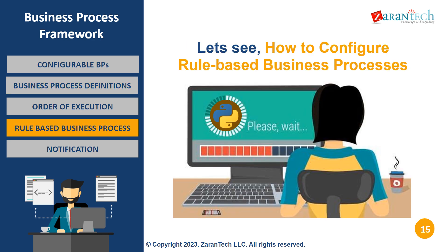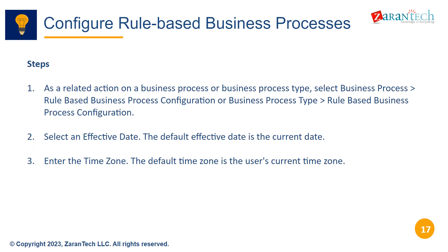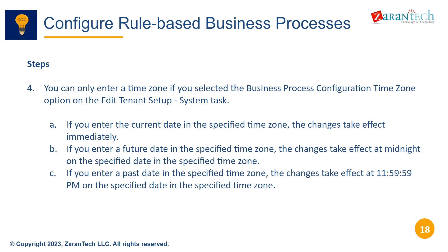Now let's look at how to configure rule-based business processes in Workday. This provides the ability to select different process definitions based on conditional rules. With rule-based configuration, you create a hierarchy of if-then condition rules that determine which process definition Workday selects at runtime. Evaluation stops when the first rule is satisfied. From the related actions of a process or process type, select rule-based business process configuration. Enter an effective date, which defaults to today's date. Optionally enter a time zone if enabled on your tenant — this determines when the rules become effective.